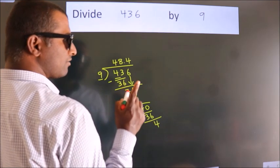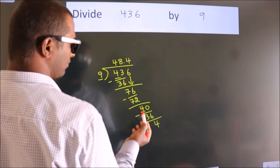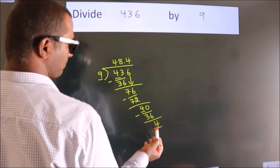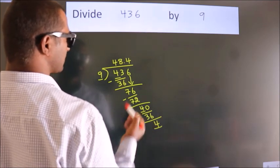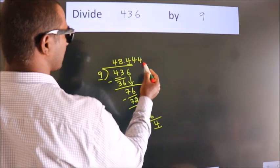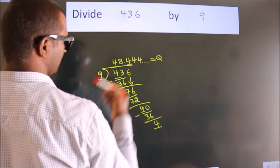Now you observe, here we had 4 and we got 4 again. That means this number keeps on repeating. So this is our quotient.